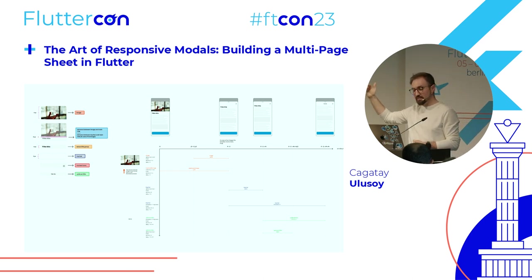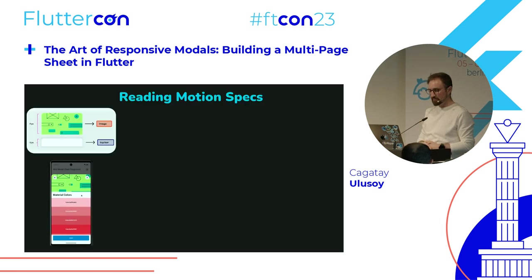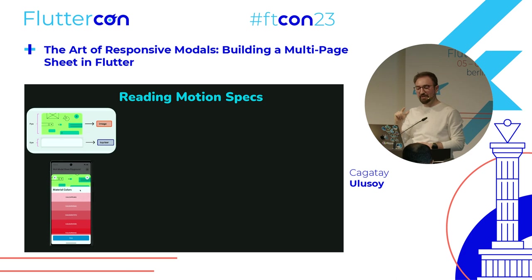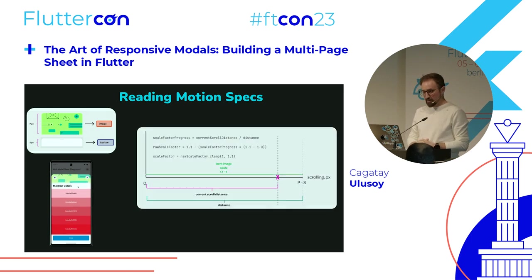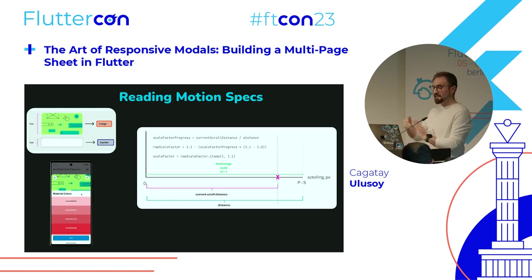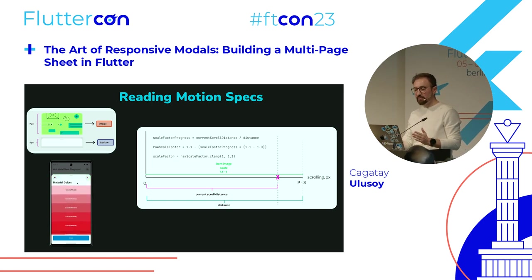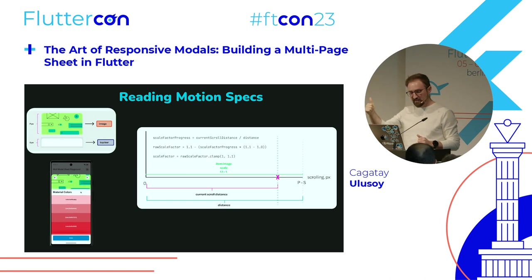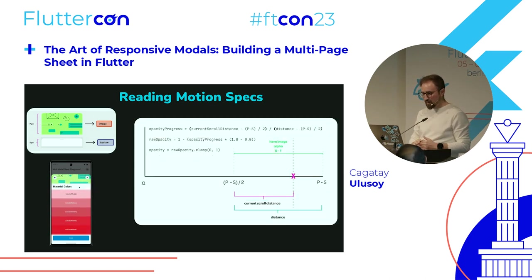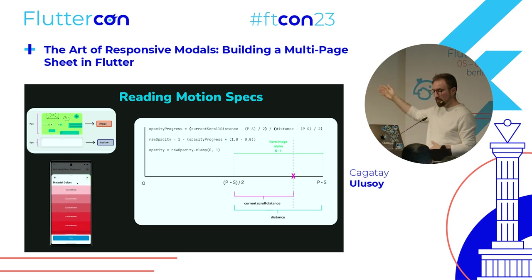Let's focus on the motion specs for the hero image. First, the image scales from 1.1 when fully visible down to 1.0 as we scroll — a total change of 0.1. Considering the ratio between total distance and current scroll distance, we can calculate the scale value at a particular scroll offset. Second, opacity starts changing halfway through: from 1 to 0, and with a similar calculation we can find the opacity value at a particular offset.